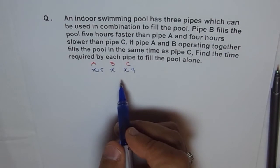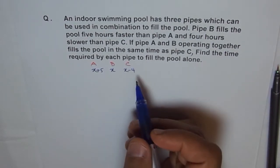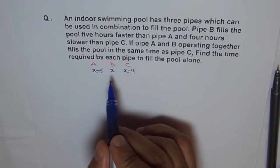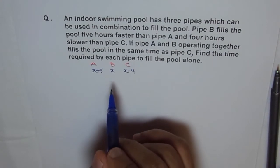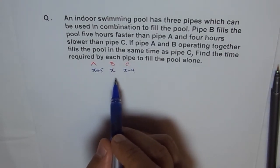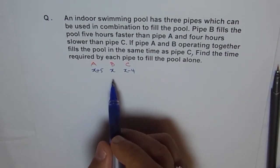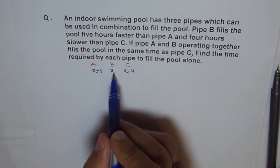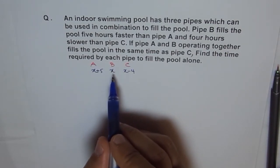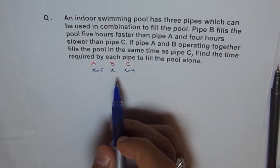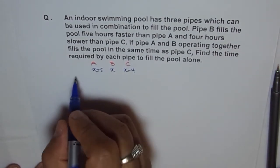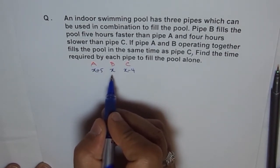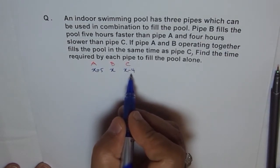Now we check the rate at which each pipe fills the pool. If pipe B fills the whole pool in X hours, then in one hour it fills one over X of the pool — that is the rate. So the rate for each pipe is one over its total time: rate of A is one over X plus five, rate of B is one over X, and rate of C is one over X minus four.